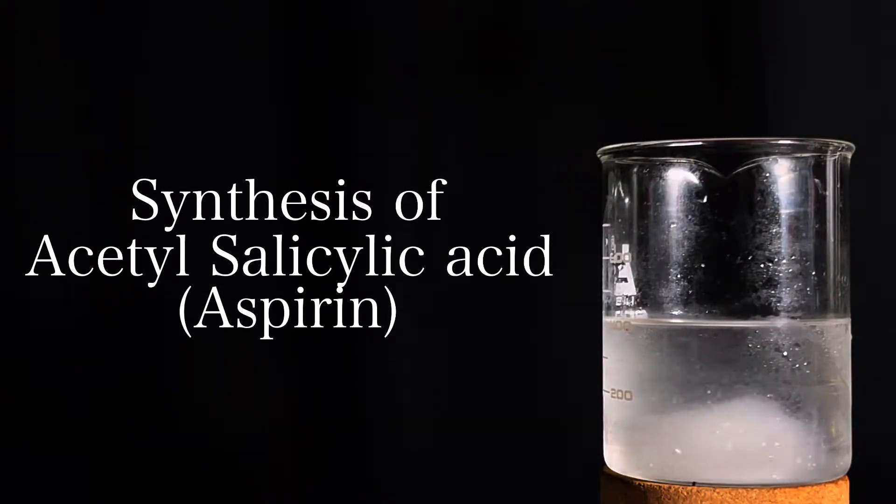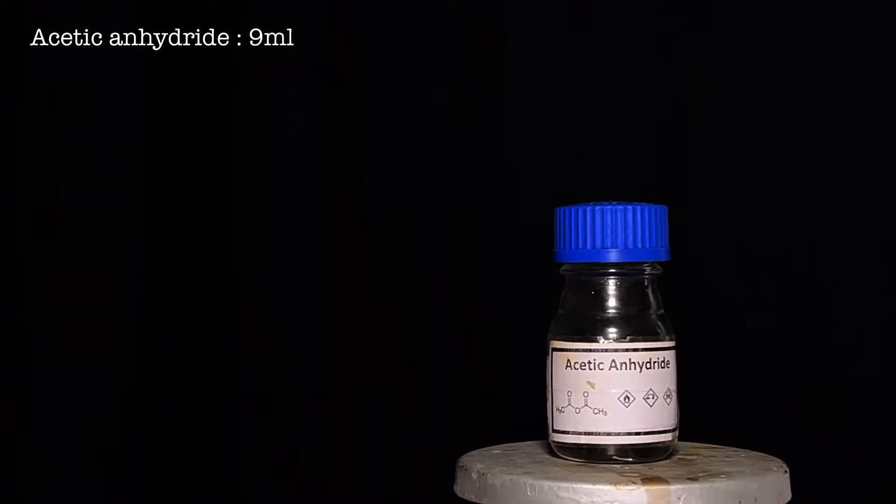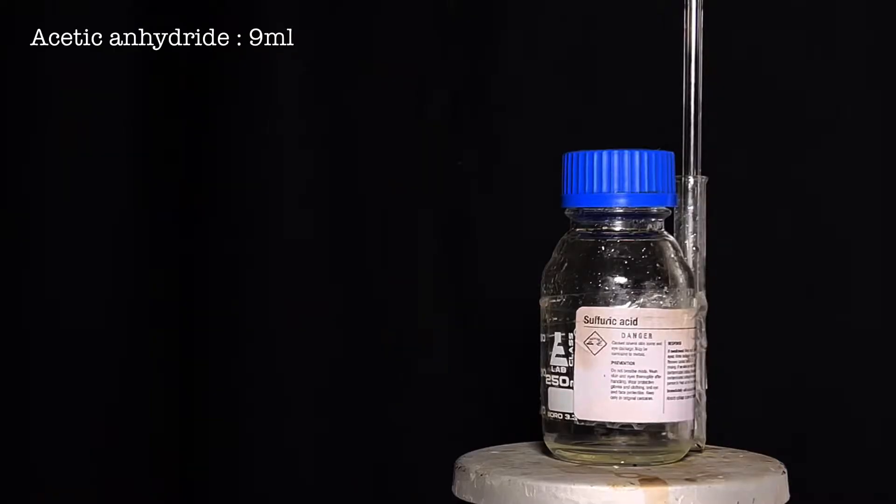Hello friends, in this video we will be synthesizing aspirin, or acetyl salicylic acid, by the acetylation of salicylic acid. For this synthesis you will need 5 grams of salicylic acid, 9 milliliters of acetic anhydride, and 5 drops of concentrated 98% sulfuric acid.